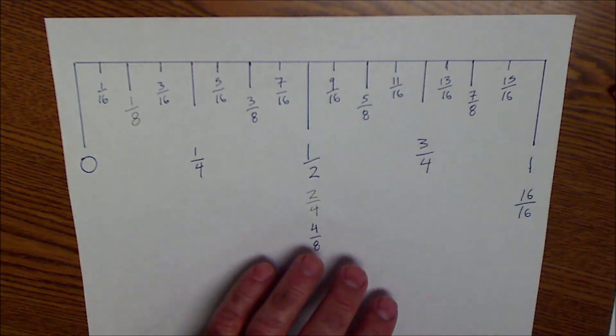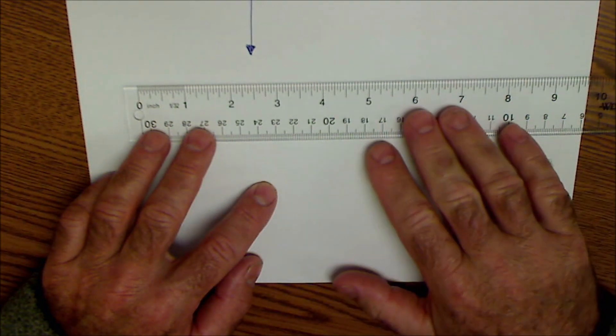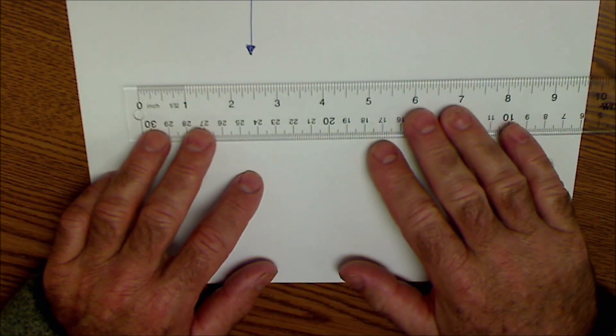So that's how you break a ruler down. If you want to get to fluency in fractional measurement, you just practice it a lot.